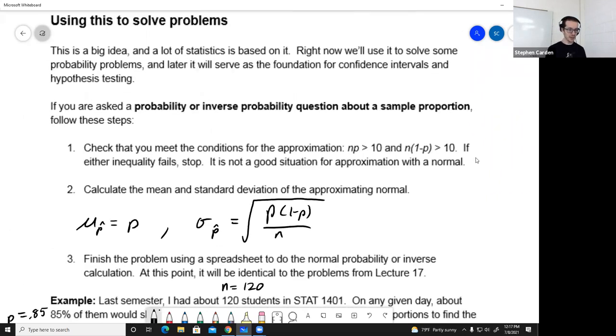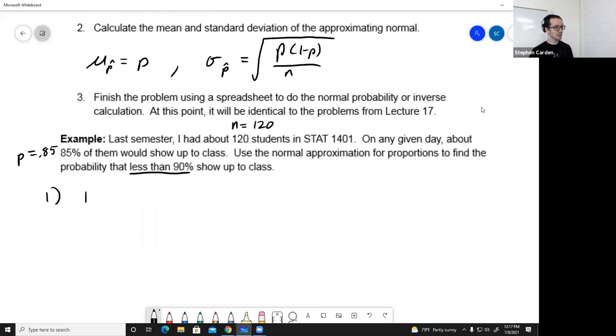So I'm going to follow these three steps right here. Step one. Is n times p greater than 10? Is n times 1 minus p greater than 10? Well, n is 120. p is 0.85. You multiply those, you get 102. Yeah, that's bigger than 10. So I've met the first one. n is 120. 1 minus p, 1 minus 0.85. That would be 0.15. So 15% of 120. That is 18. That's also bigger than 10. A little bit close, but it meets the condition. Okay, so it's kind of bad news because I've got to do the rest of the problem now.